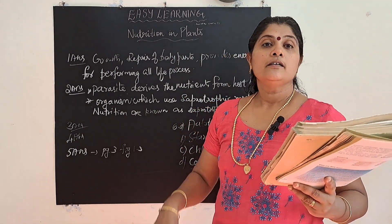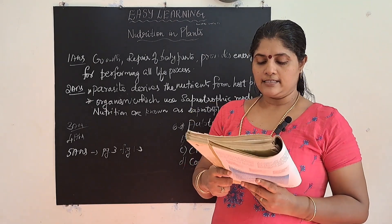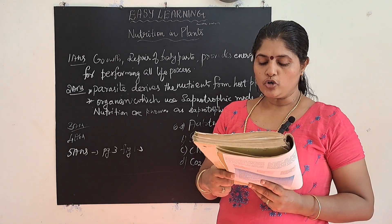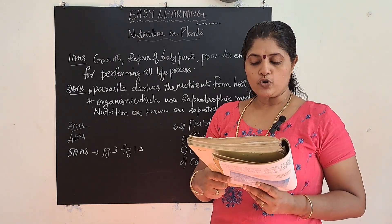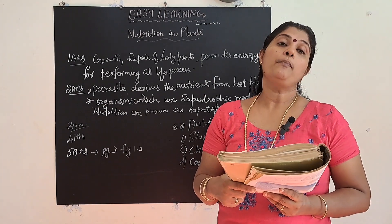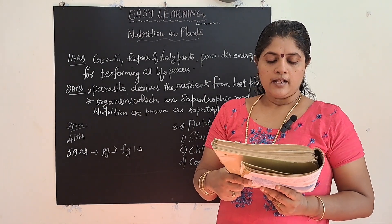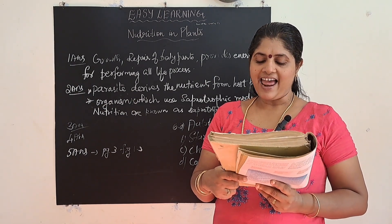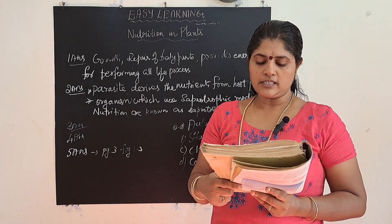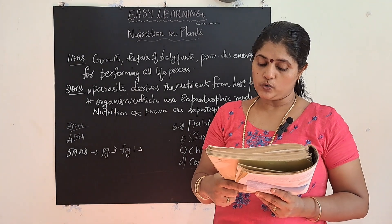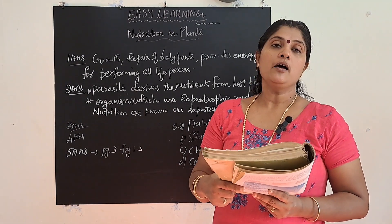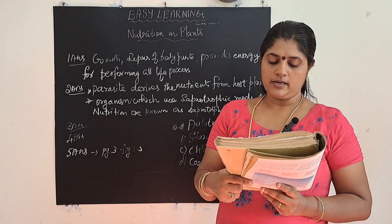Multiple choice — pick the correct answer. First: Amarbel is an example of autotroph, parasite, saprotroph, or host. Amarbel is an example of a parasite. Second: the plant which traps and feeds on insects — Cuscuta, china rose, pitcher plant, or rose. The answer is pitcher plant.